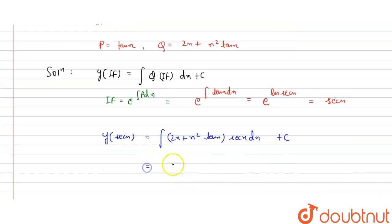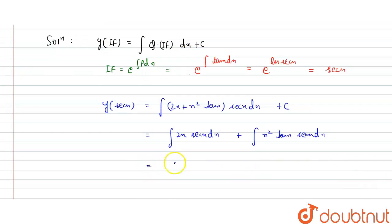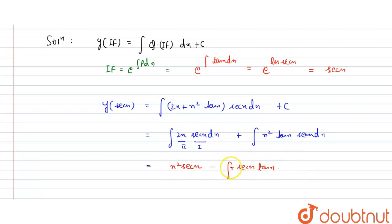Now solve this integral by splitting it into two parts: ∫2x·sec(x) dx and ∫x²·tan(x)·sec(x) dx. Using integration by parts on the first part — first function sec(x) as is, integration of 2x is x², minus integral of derivative of sec(x), which is sec(x)·tan(x), times x² dx — plus ∫x²·tan(x)·sec(x) dx. These two terms are equal and opposite, so they cancel to zero.